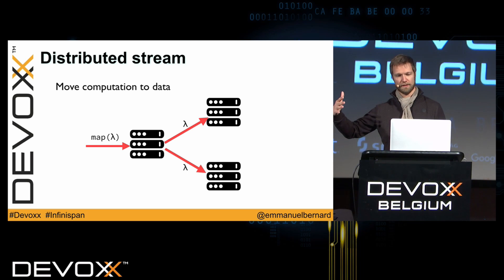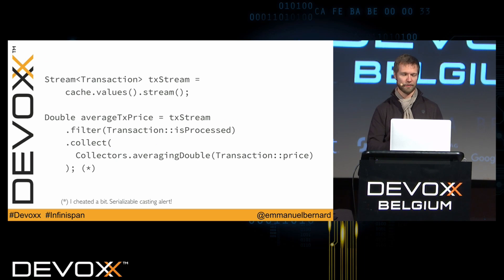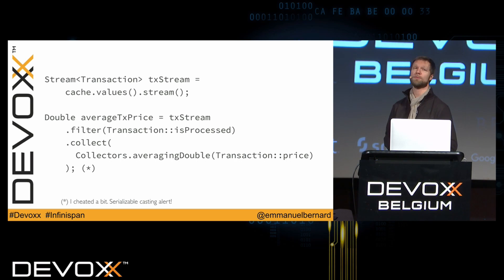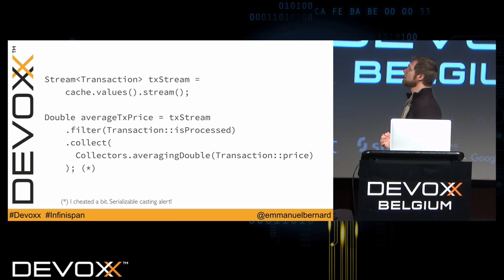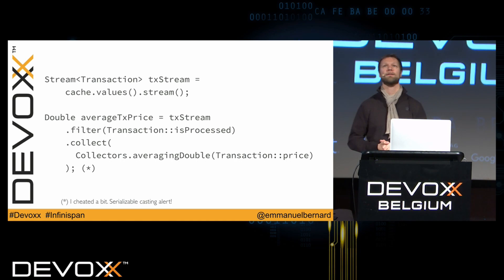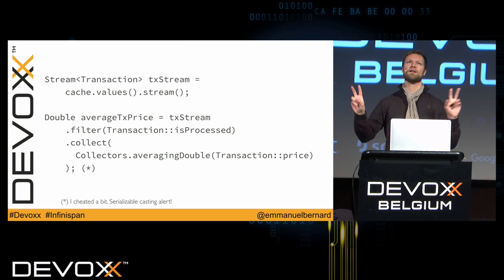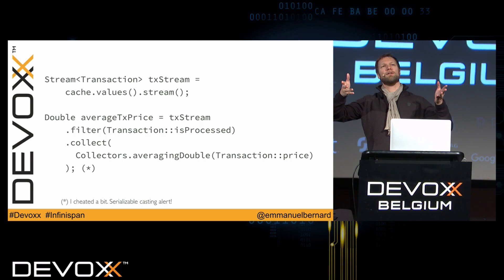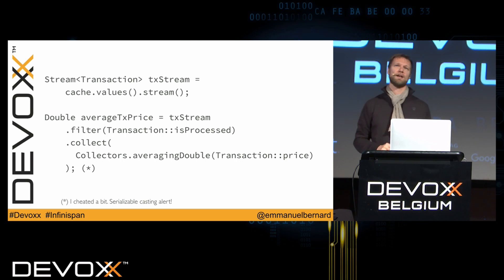Some operations require going back to the coordinating node for final correlation, but we try to stay as local to the data as possible. From a code point of view it looks just like Java streams — Infinispan and any JCache-compliant product exposes the cache API as a subclass of Map, so you just call cache.values() and get the stream API. For example: filter by transactions that have been processed, then compute the average price and return it. Lambdas need to be serializable for distribution, so there's a small extra verbosity using Infinispan's helper classes.